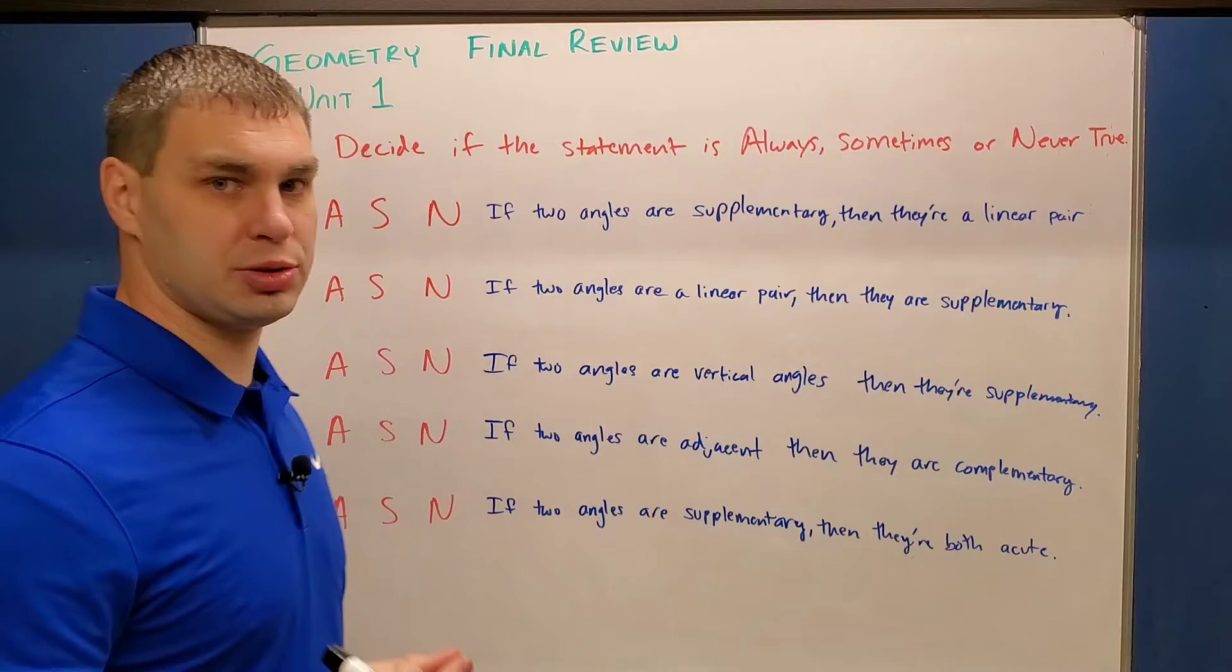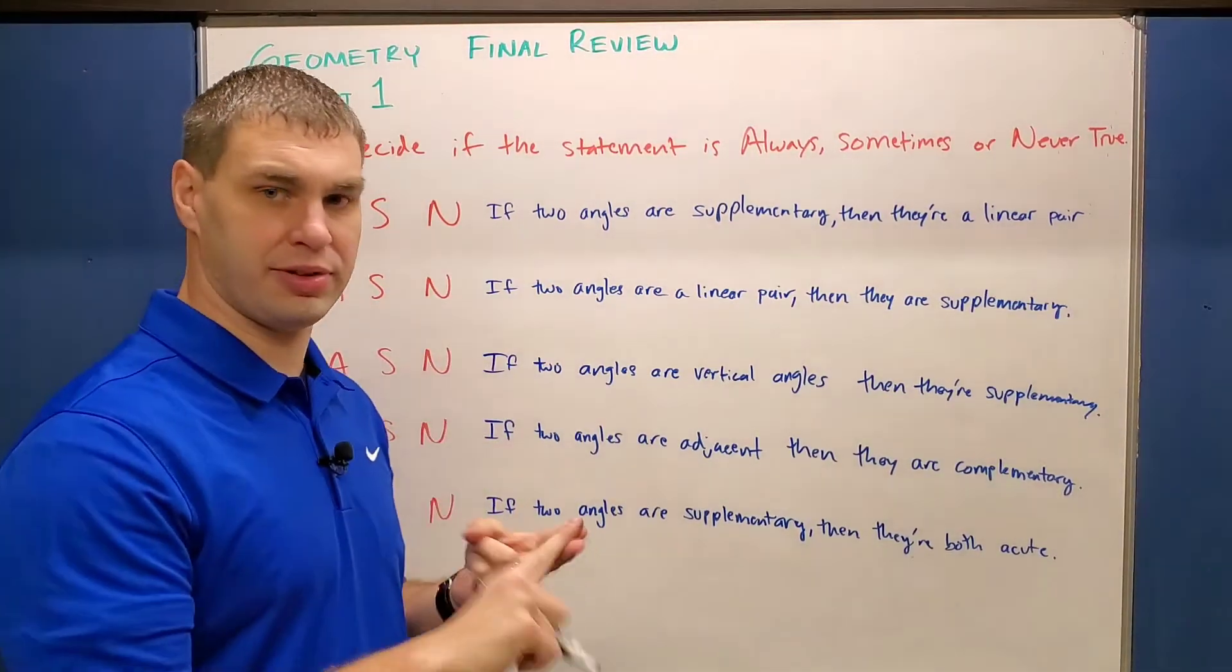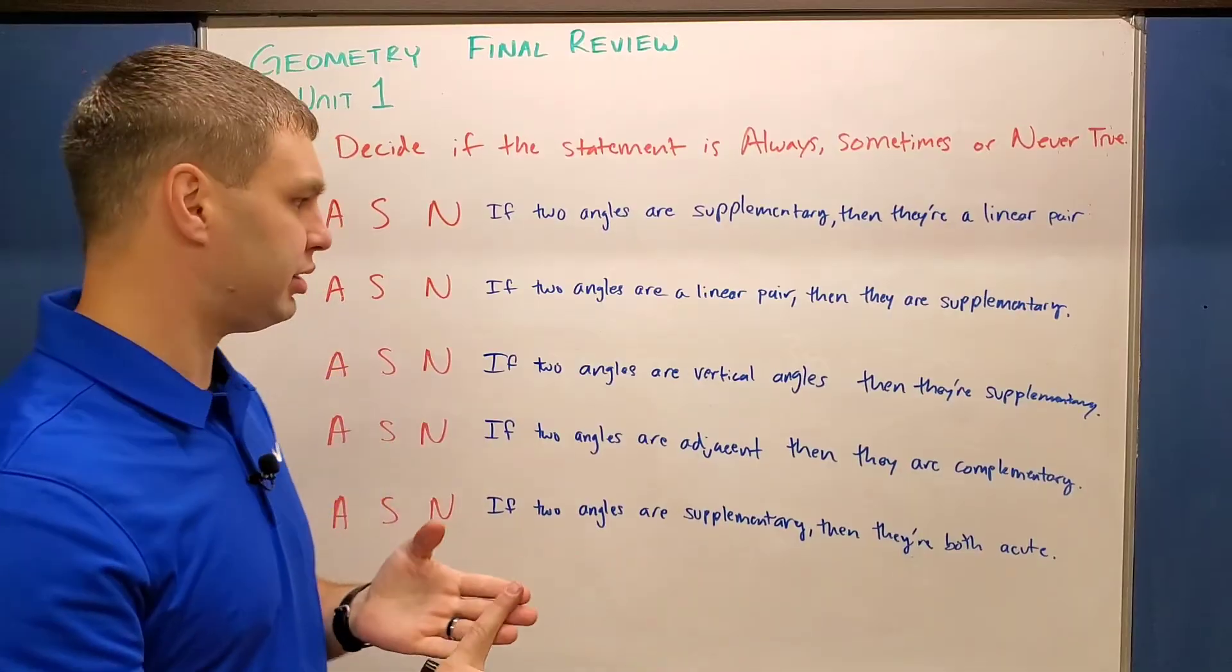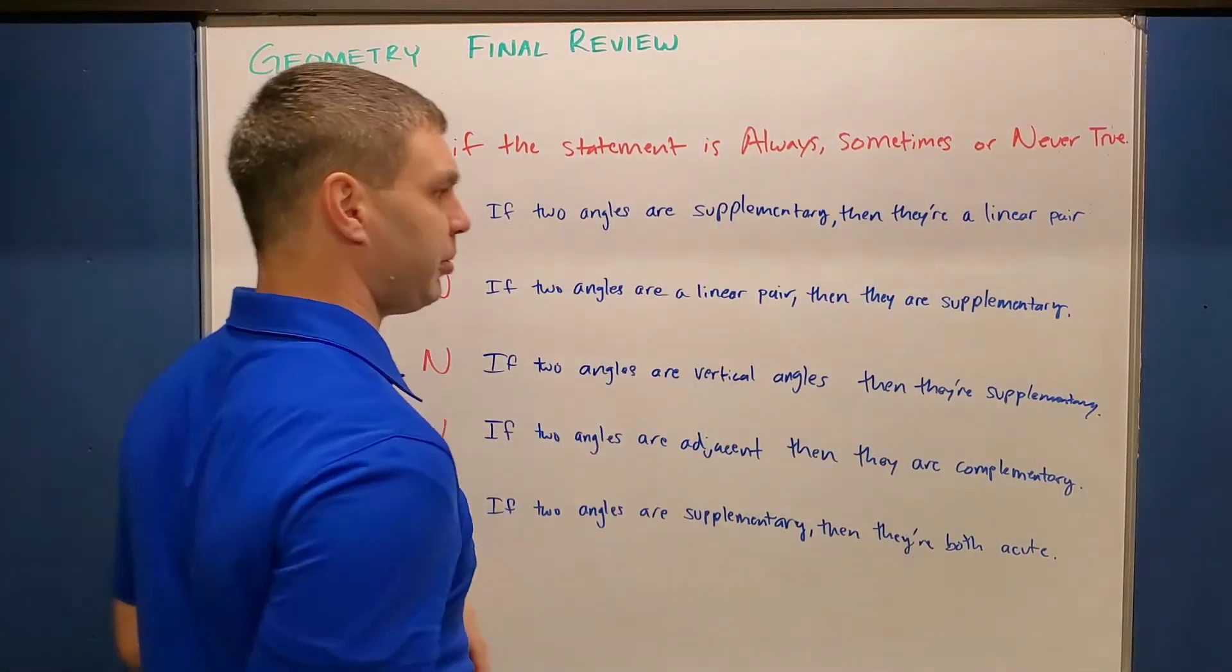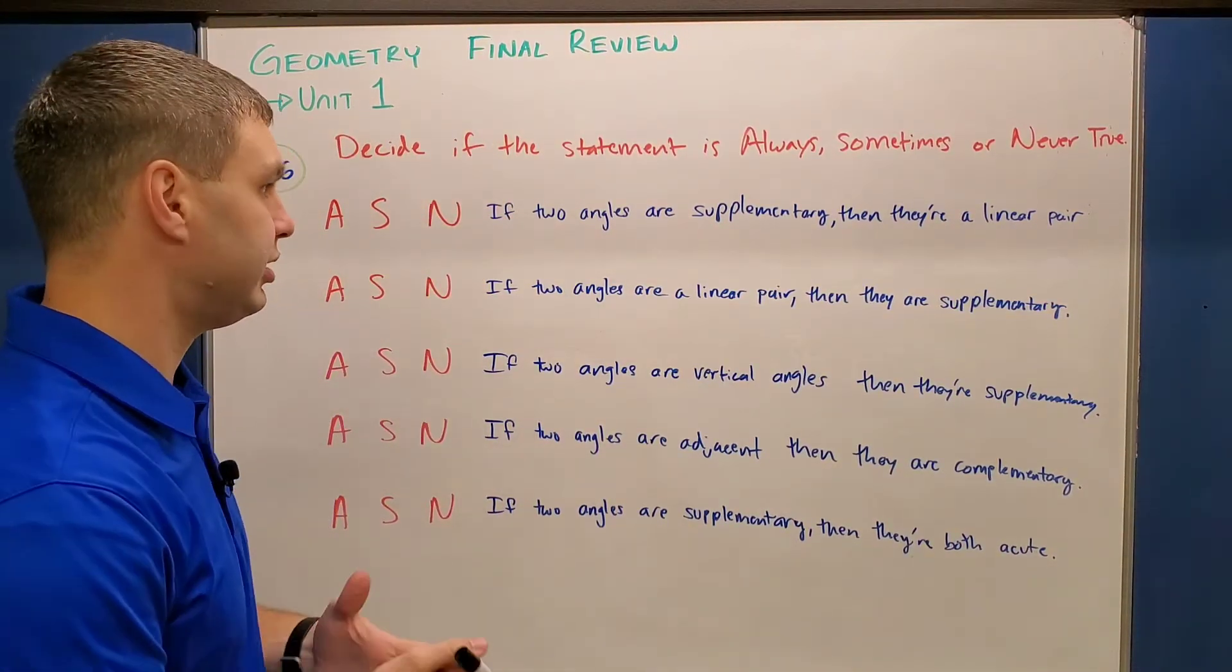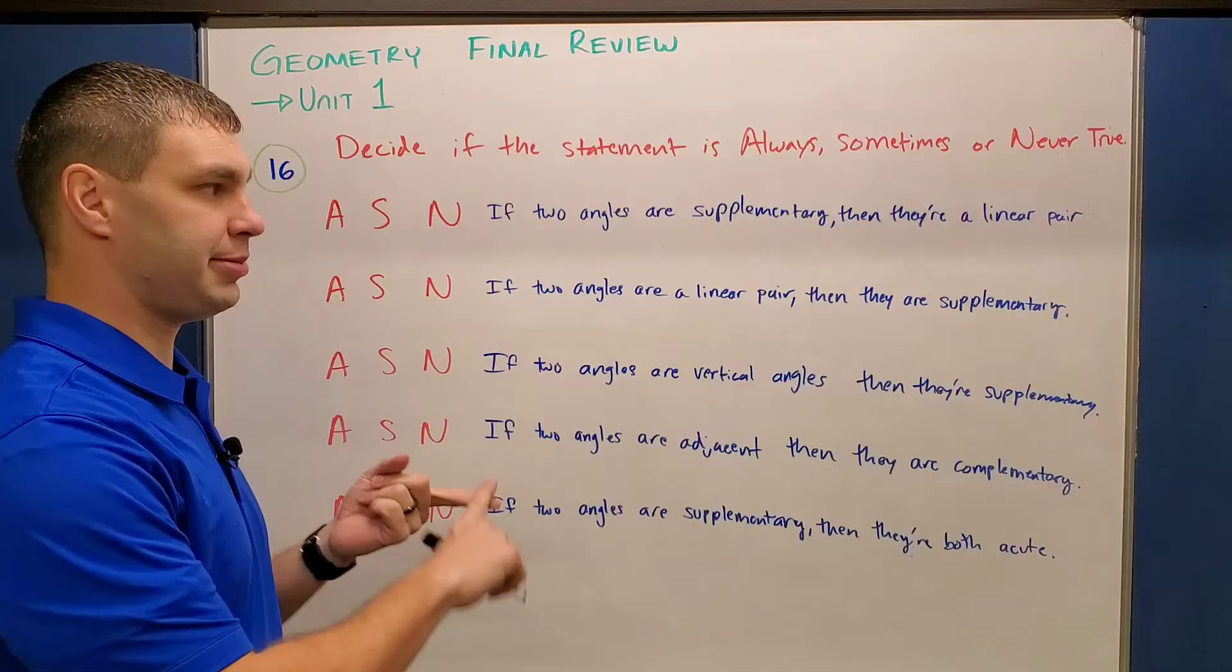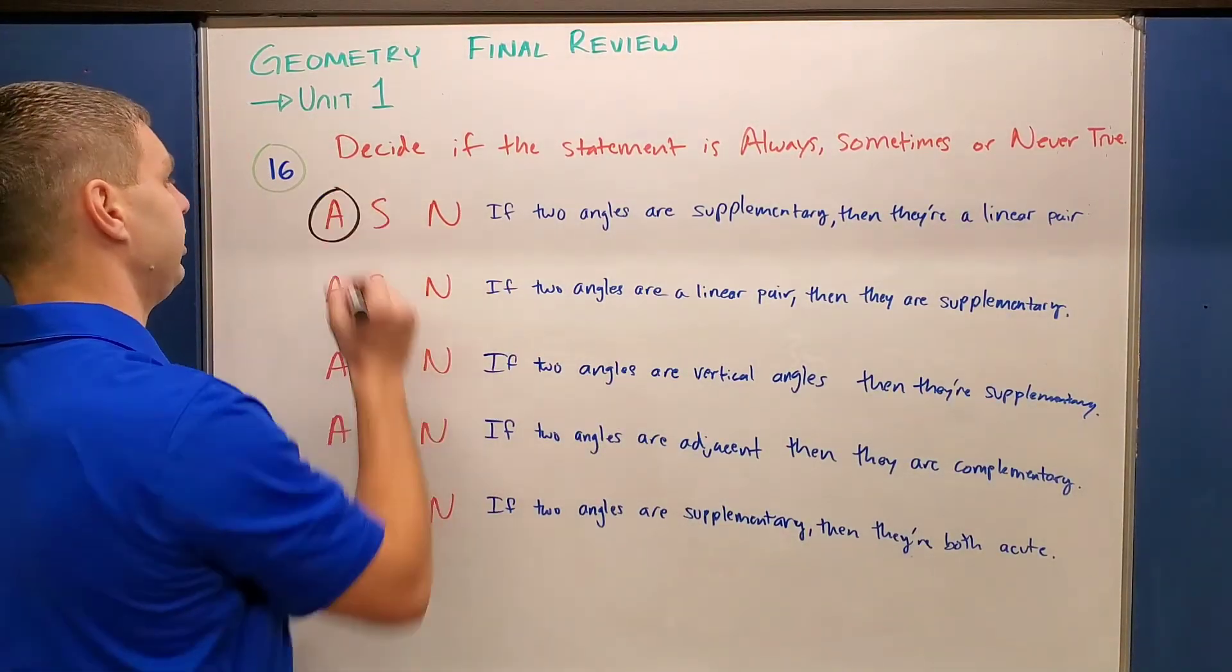All right guys, last topic for this video is we have to decide if these statements are always, sometimes, or never true. Talking about supplementary, vertical, complementary, those different types of angles. So let's look at what we have here. This first one says if two angles are supplementary, then they're a linear pair. Well, yes, that's one of the definitions of supplementary. It has to be a linear pair and adjacent angles. This would be always, that is always true.